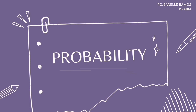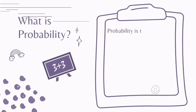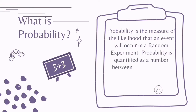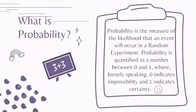Good morning everyone, I'm Rajenelle Ramos, and this is my performance task in probability. Probability is the measure of likelihood that an event will occur in a random experiment. Probability is quantified as a number between 0 and 1, where 0 indicates impossibility and 1 indicates certainty.